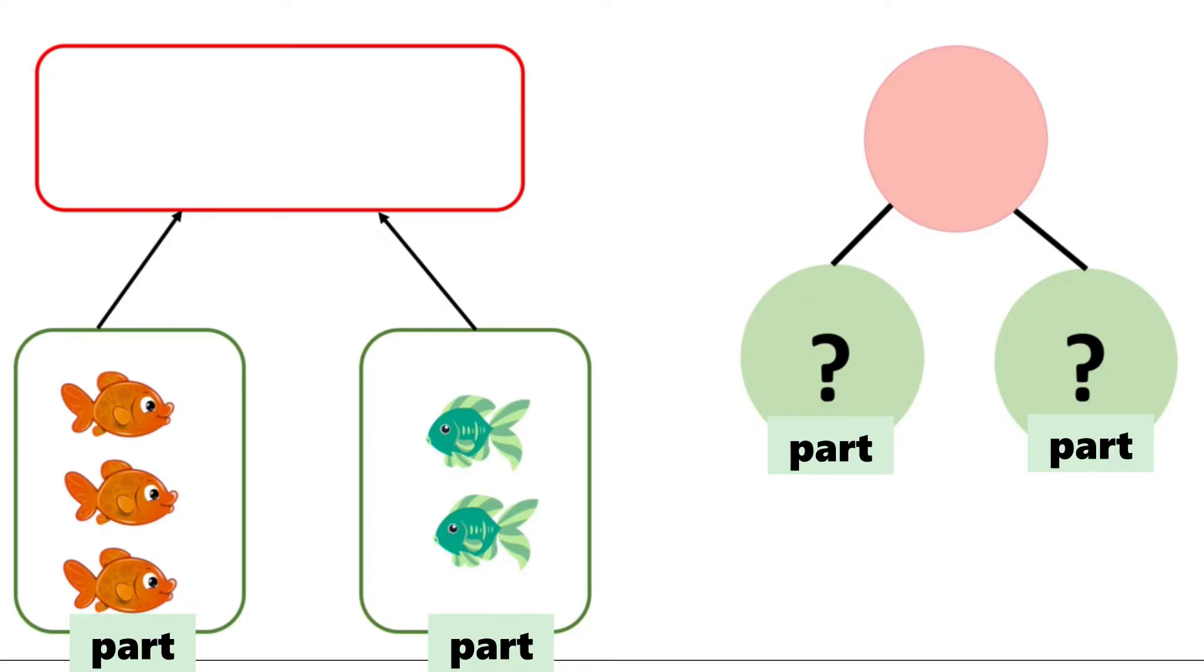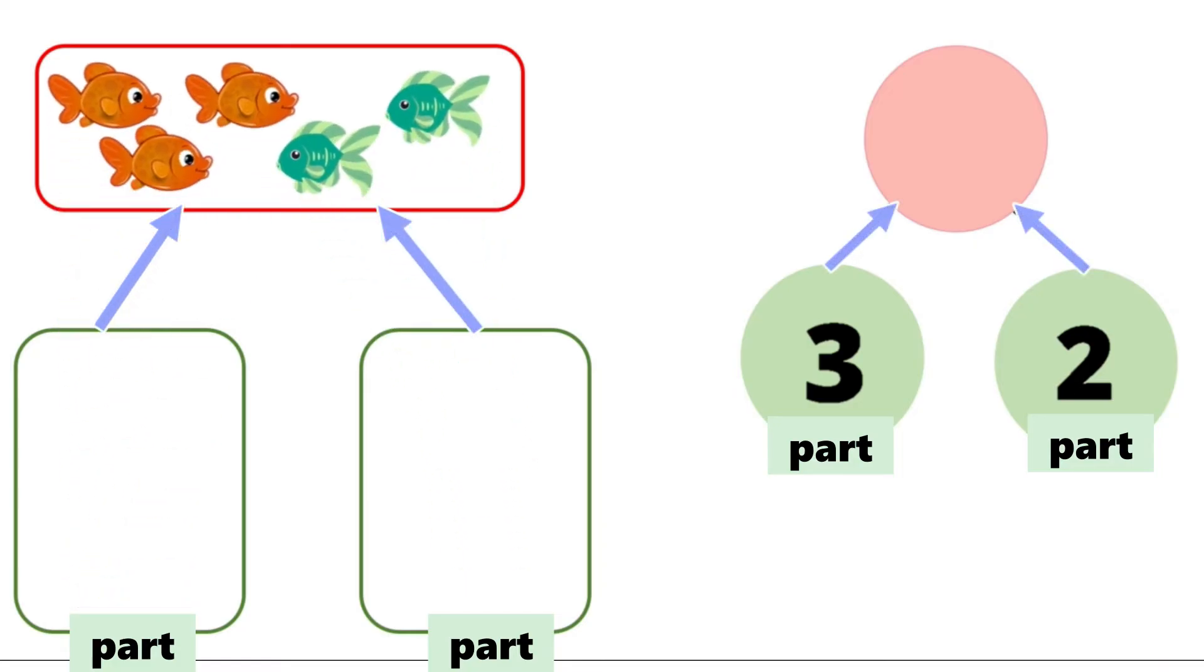That's right. There are three orange fish. So we write three. Two green fish. So we write two. If we put them together, how many fish will there be all together?